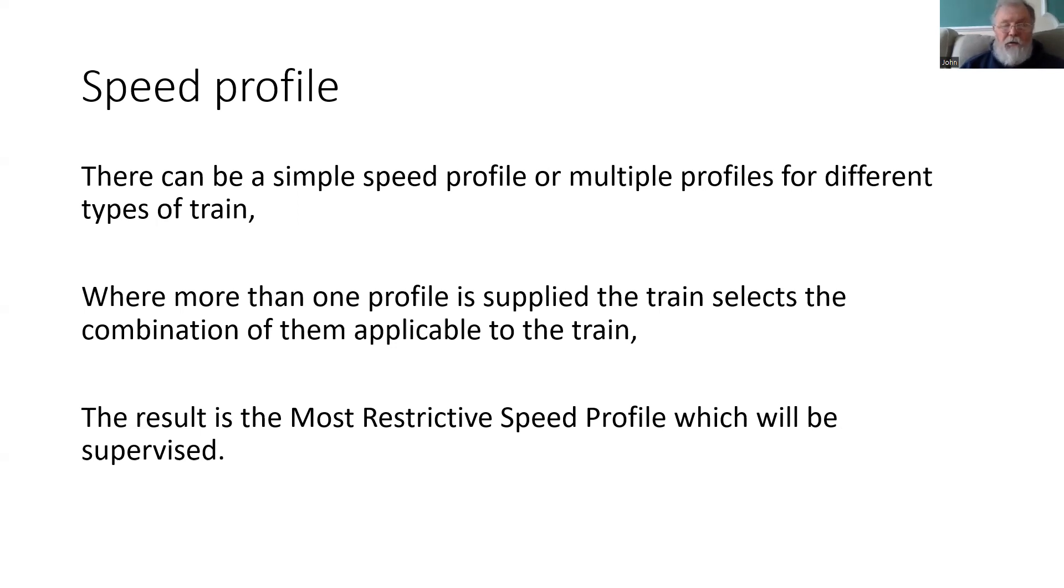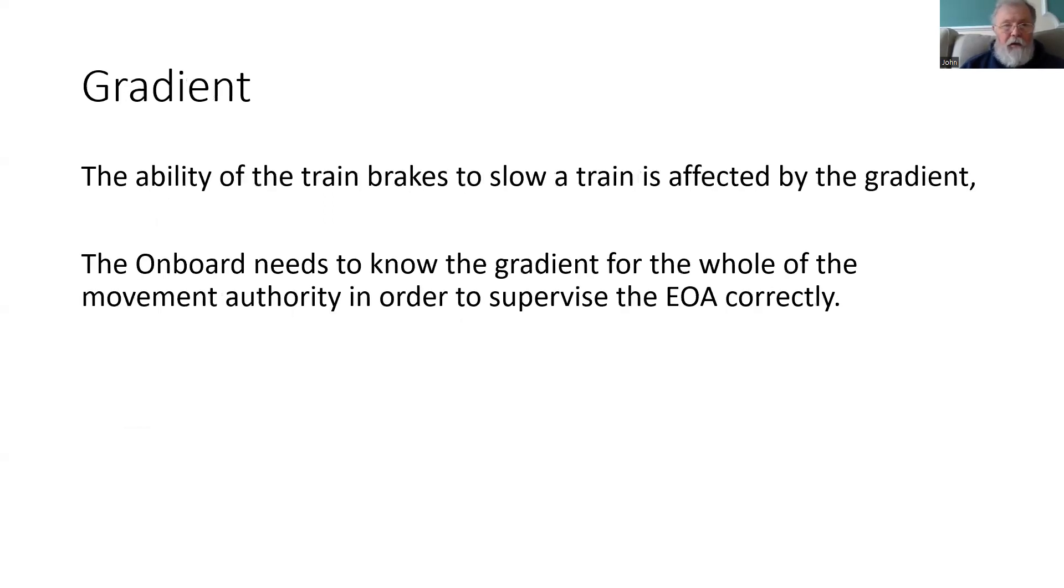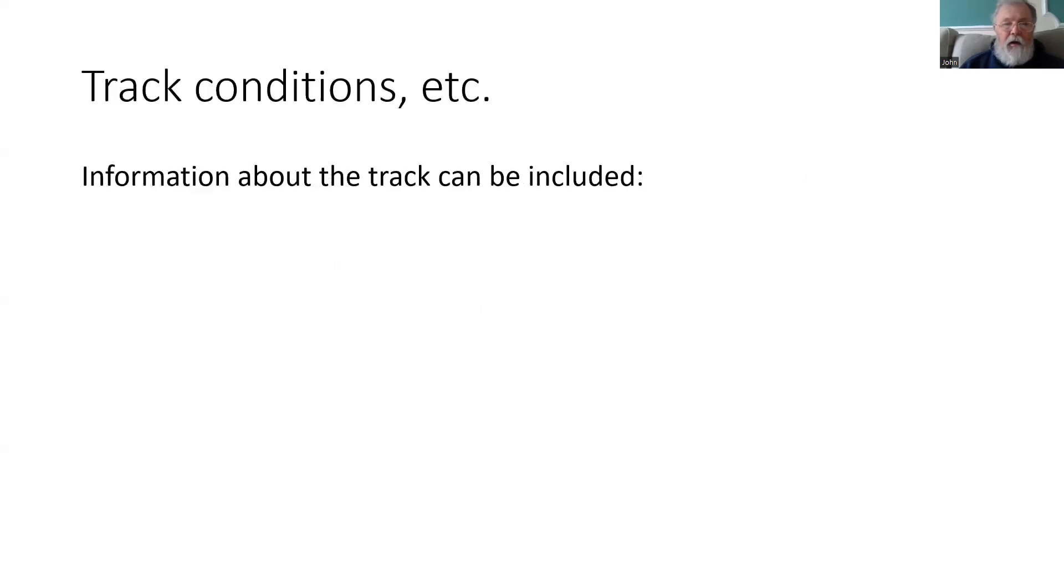In another chat, we'll have a look at how speed profiles work. If you want to stop a train, you need to know how good the brakes will be, and the brakes' ability will be affected by the gradient. So the onboard needs to have information regarding the gradient for the whole of the movement authority in order to supervise the End of Authority correctly.